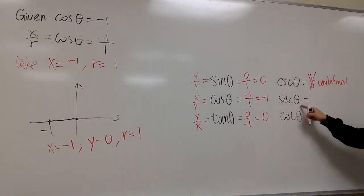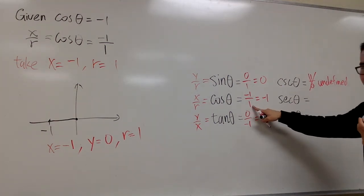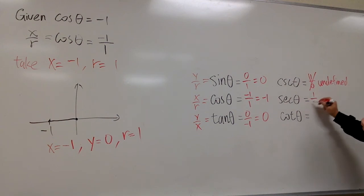And then, sec theta is technically 1 over negative 1. But it doesn't really matter, because I still end up with negative 1.